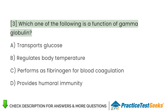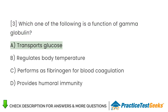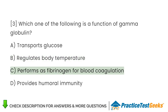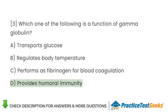Which one of the following is a function of gamma globulin? A. Transports glucose. B. Regulates body temperature. C. Performs as fibrinogen for blood coagulation. D. Provides humoral immunity.